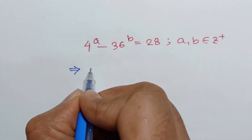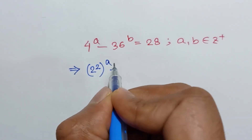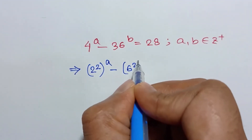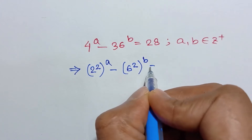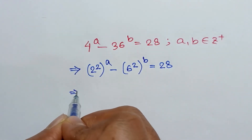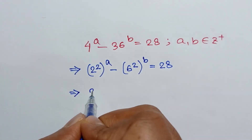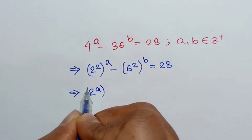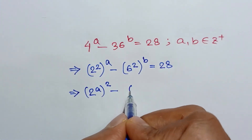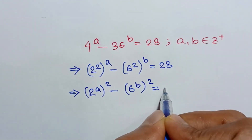We rewrite: 4 is equal to 2 squared, so 4 to the power a becomes (2 squared) to the power a, which is (2^a) squared. Similarly, 36 is equal to 6 squared, so 36 to the power b becomes (6^b) squared. So the equation is (2^a)² minus (6^b)² equals 28.